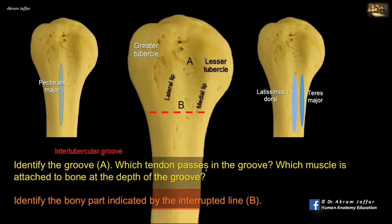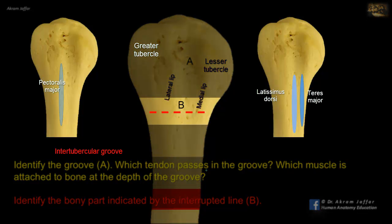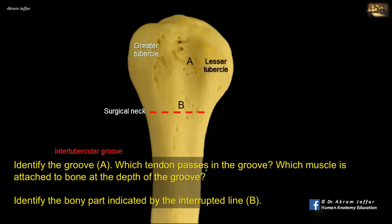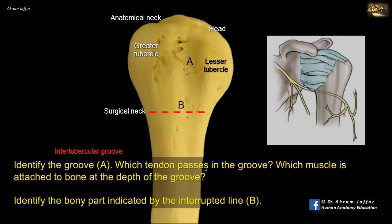Now identify the bony part indicated by the interrupted line B. This is the narrow area between the proximal end of the humerus and the shaft, called the surgical neck of the humerus because it is a common site of fracture. The surgical neck should be differentiated from the anatomical neck, which is located distal to the head, between the head and the proximal end containing the greater and lesser tubercles. The bone at the surgical neck is closely related to the axillary nerve, which passes through the quadrangular space below the shoulder joint capsule to wind around the surgical neck, making it liable to injury in surgical neck fractures.